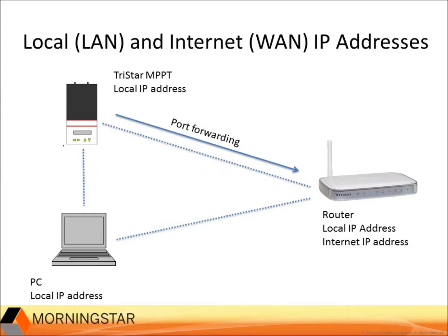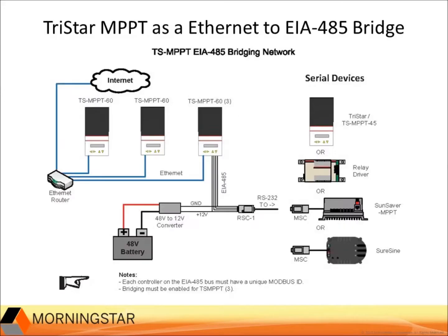Here's a simple diagram showing an Ethernet TCP/IP network configuration. The TriStar MPPT is part of the local area network, and the router is set up with port forwarding to be able to connect over the internet. In this final networking example, the TriStar MPPT-60 provides an Ethernet TCP/IP link or bridge to an EIA-485 network. This makes it possible to assign an IP address to the serial devices so they can connect to the local area network and the internet.